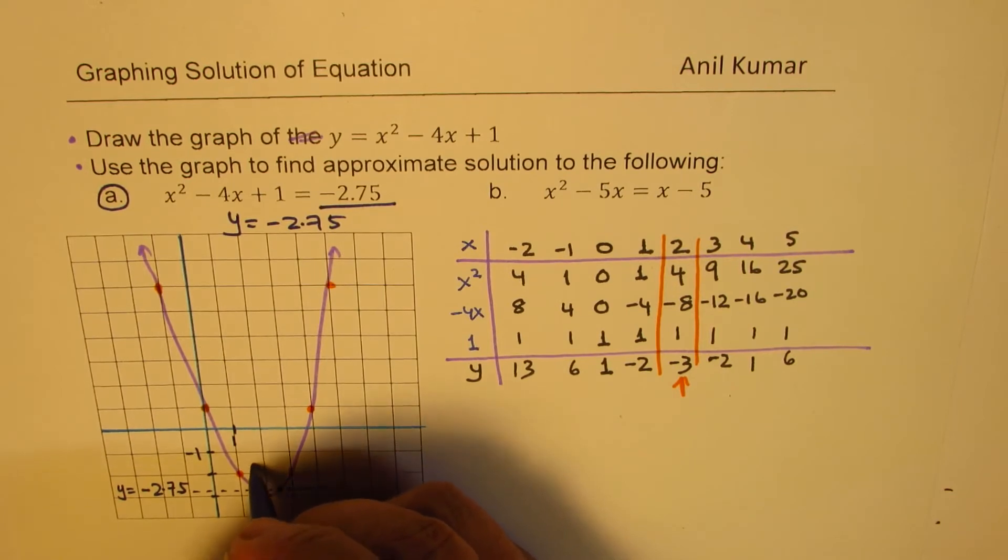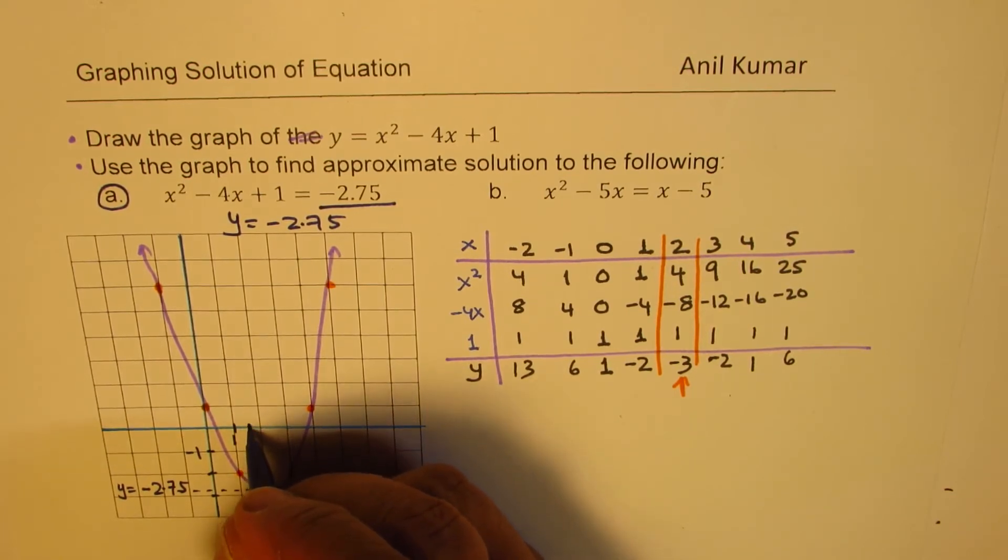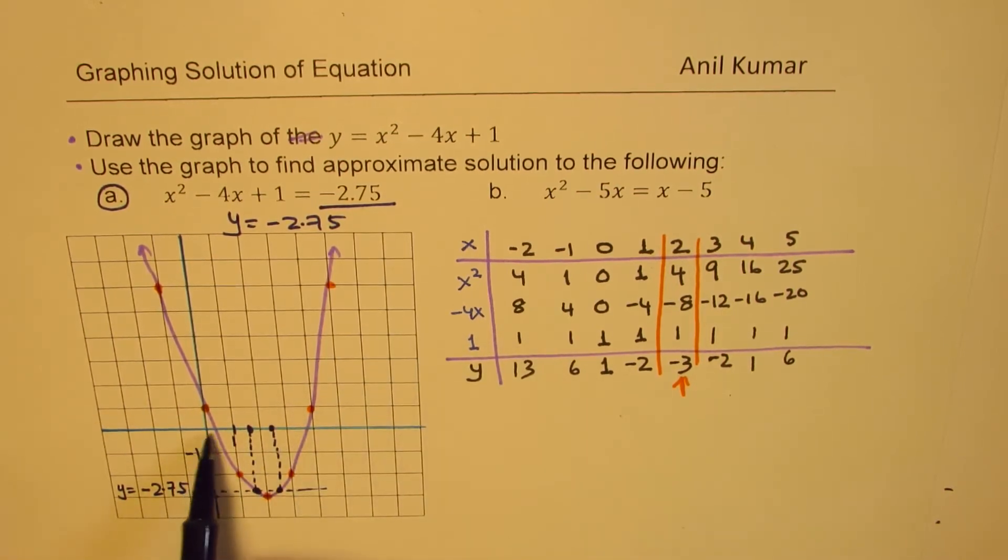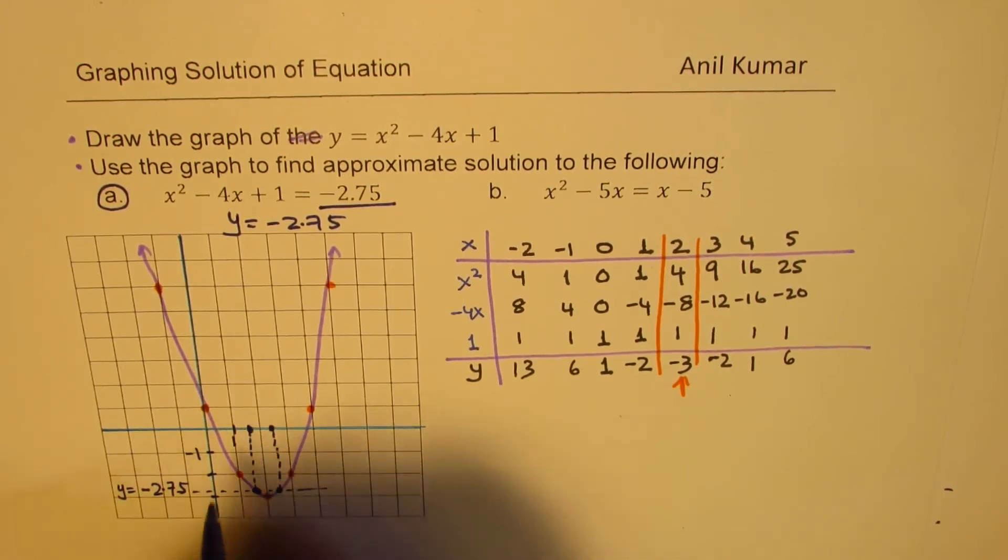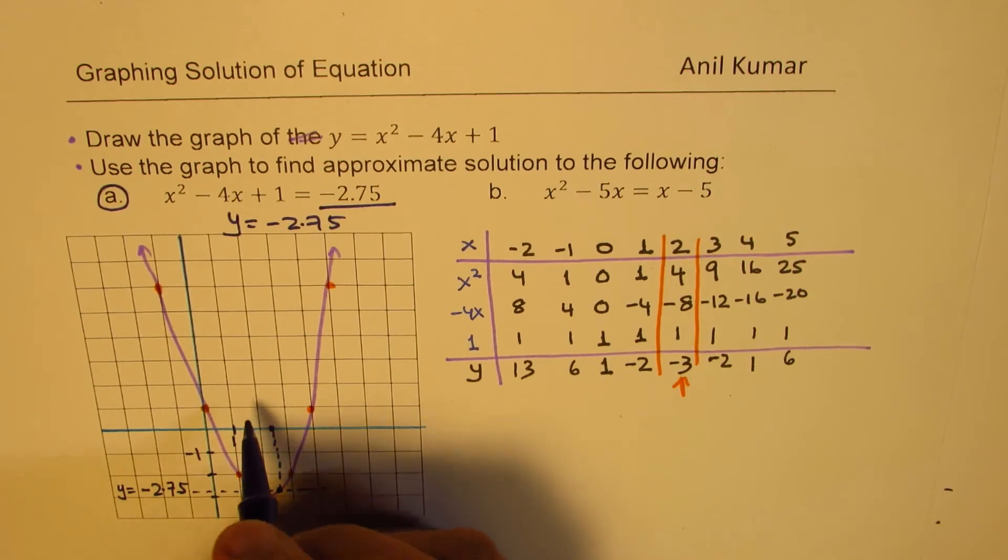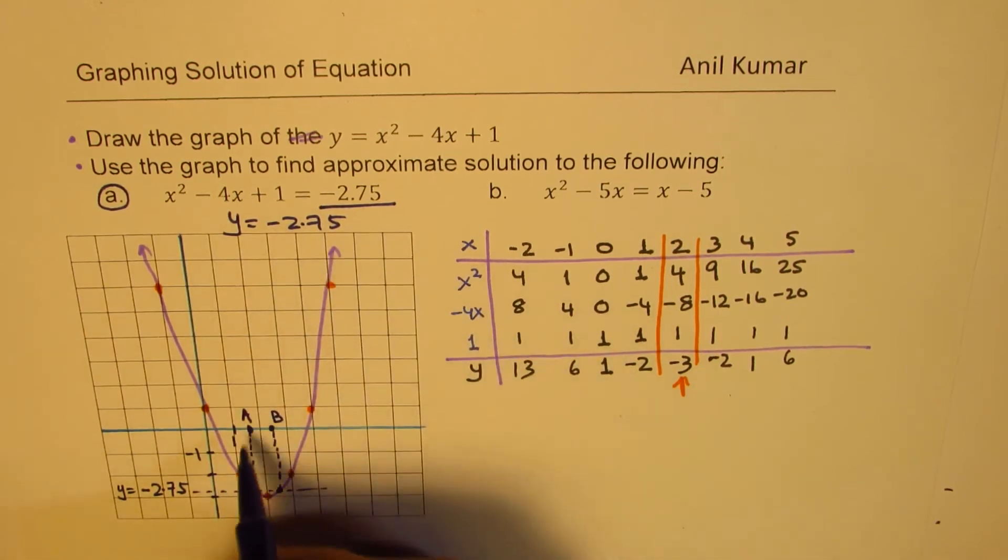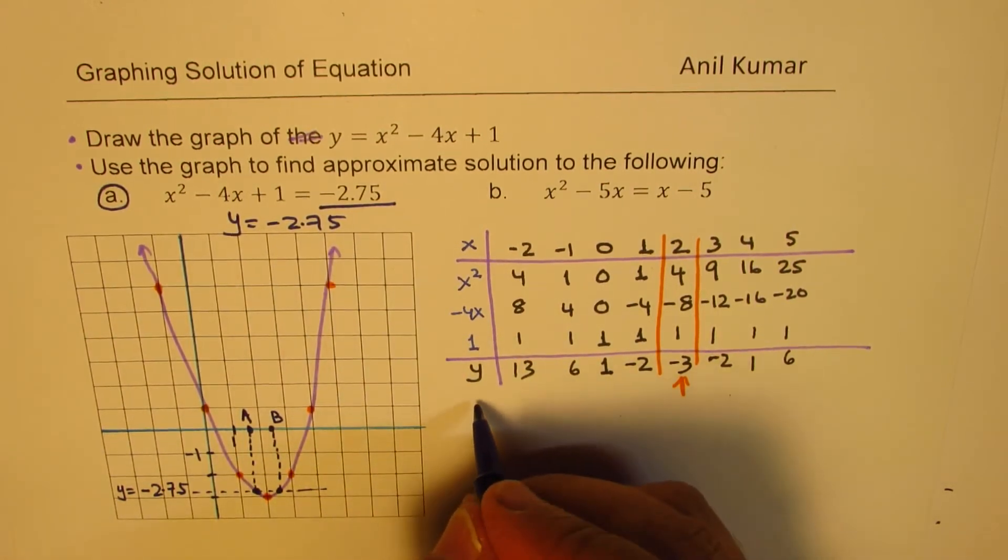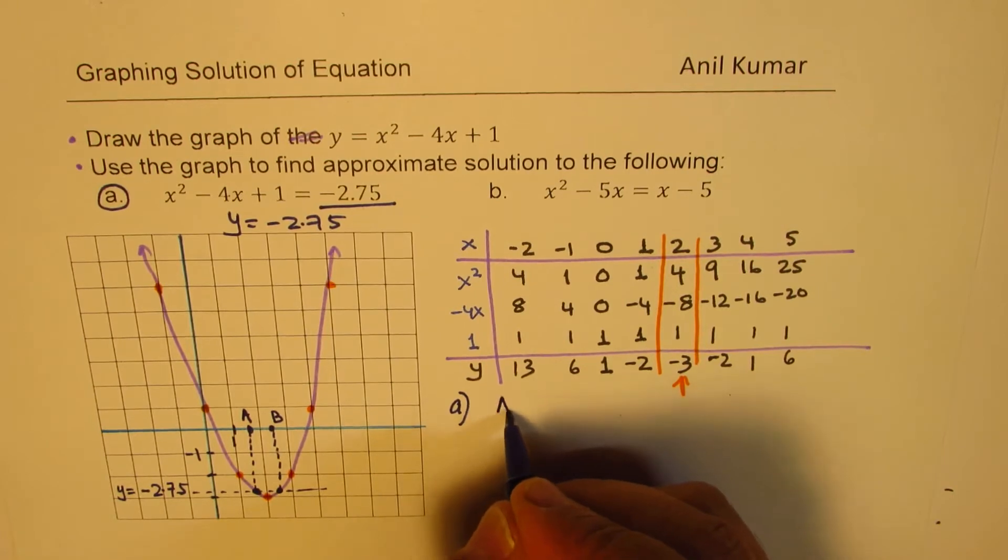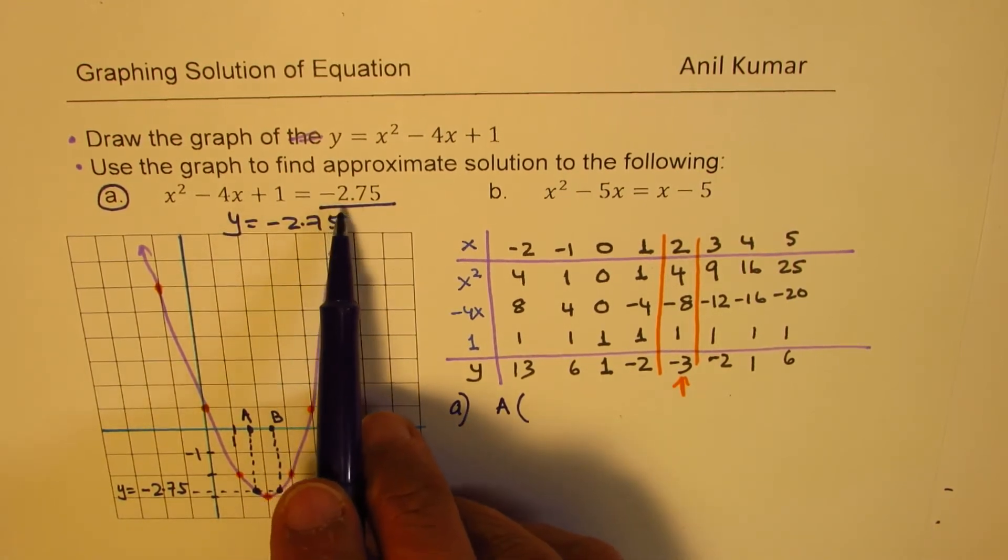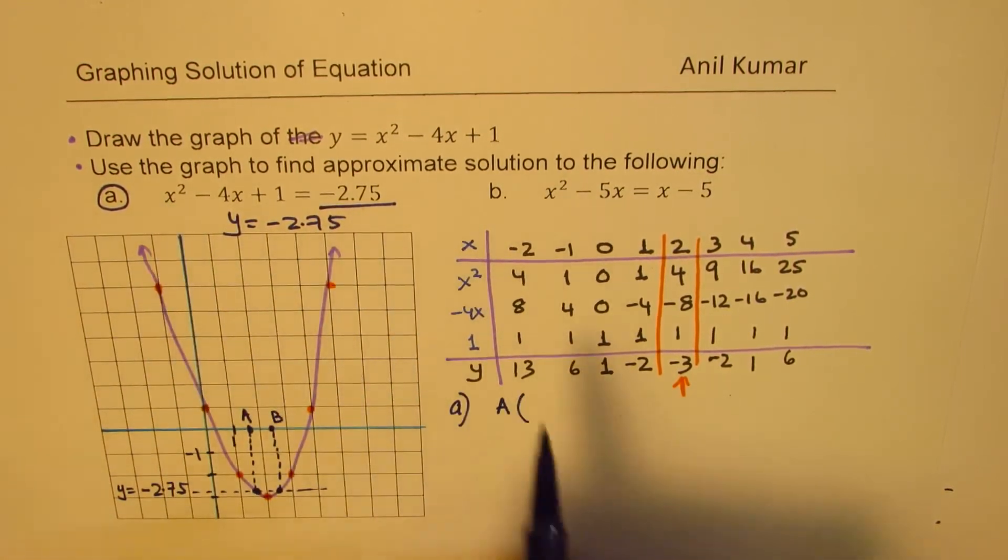So we can actually relate. We can now find these points here. Approximately, we could say that this is more than one, of course, and less than two. So we can estimate this as one point. So we can say this point here, let's say a and b. So from the graph, it is not very accurate. So for part a, we get point a, there are two solutions. So part a is, when you are saying the solution, we mean x value.